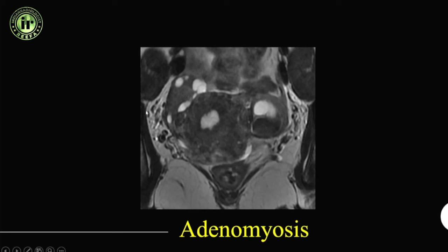A typical appearance of a frozen pelvis — here you can see the ovaries are flushed with the uterine margins, suggestive of underlying adhesions and a combination of smaller endometriotic deposits. This is important to include in your report as surgeons need to know this during surgical planning.